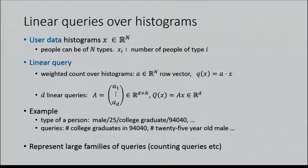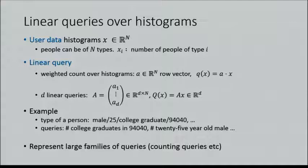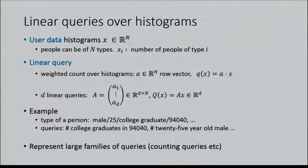The setup is linear queries over histograms. User data is a vector in capital N-dimensional space — you can think of N kinds of people, where each combination of attributes is one type. Each x_i in this vector represents the number of people of that particular type. A linear query is a weighted count over the histogram: mathematically, you have a row vector A in the same N-dimensional space, and you take the dot product of A and your user data X. For D linear queries, we put all the query vectors together into a matrix A, and the query result is simply AX.